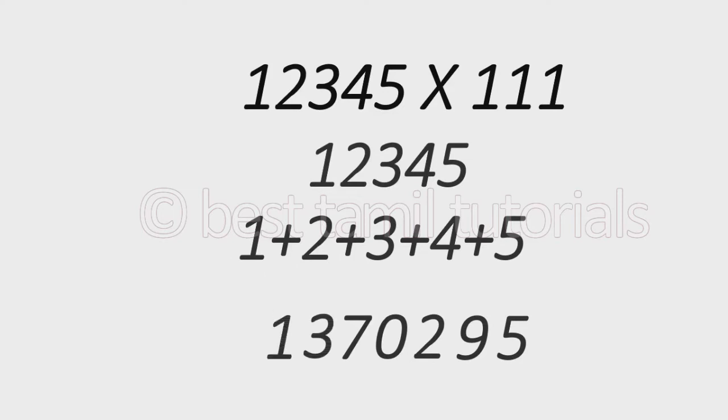This is a shortcut method. If you have any number, you will answer easily. For example, let's look at this example. Let's multiply 45 with 111 tables. If you look at this, 111 is a 3-digit number, but if we do the multiplication, 45 is a 2-digit number.